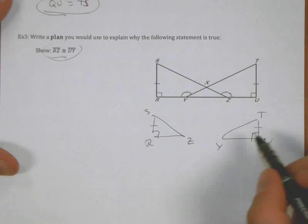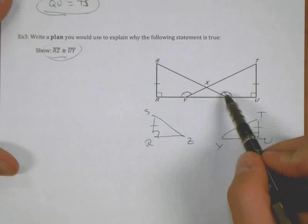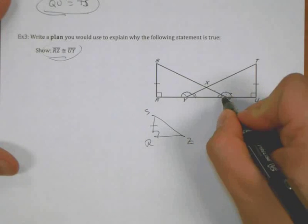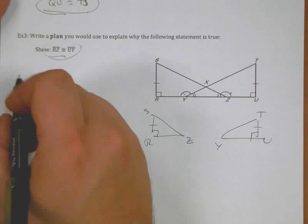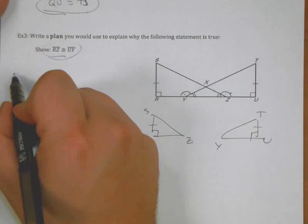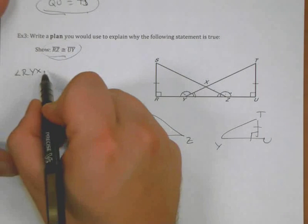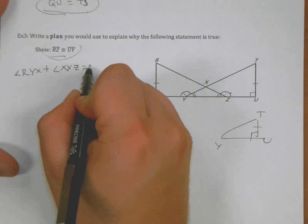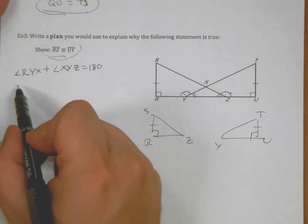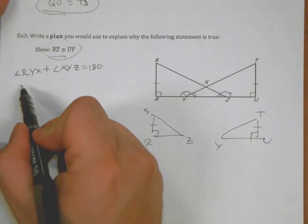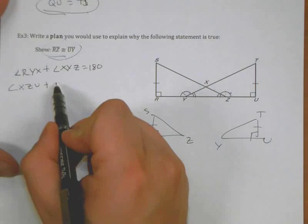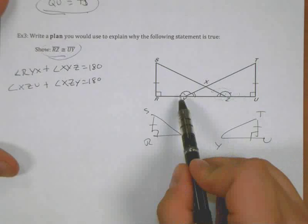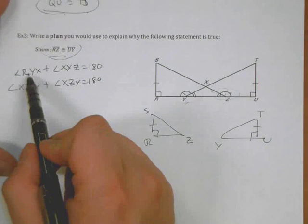So my plan for this proof might involve me explaining since these two angles are congruent, that therefore these two angles are congruent. I could maybe say that a couple of equations would be like angle RYX plus angle XYZ is a linear pair. So they're supplementary. Same thing with XZU plus angle XZY is a linear pair. So they're supplementary.